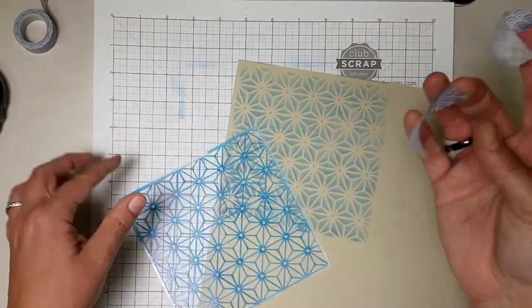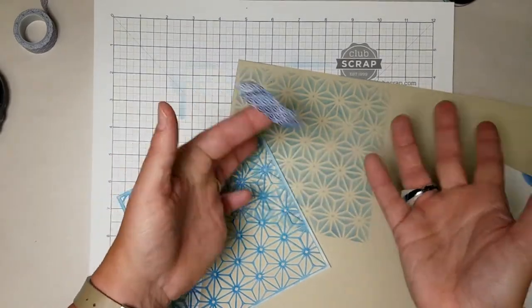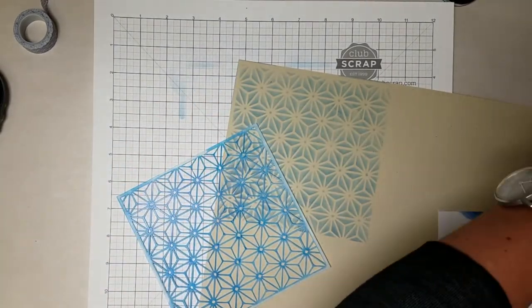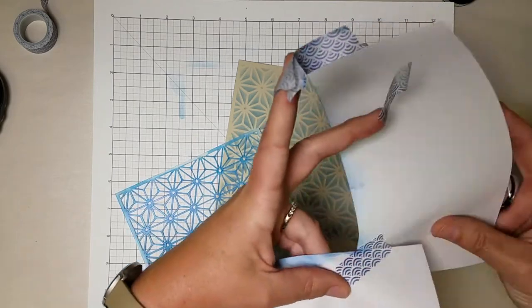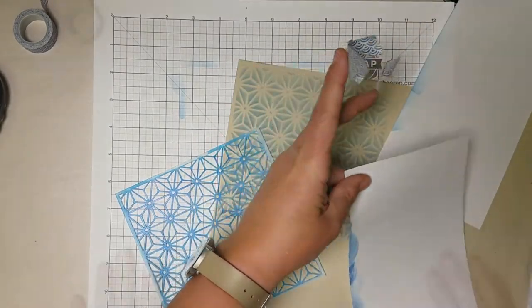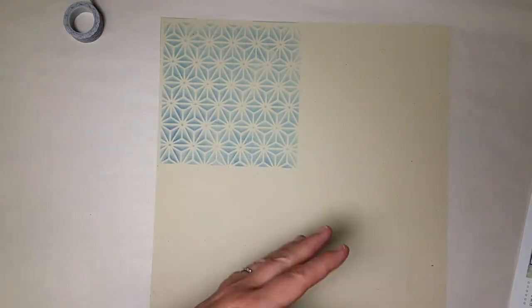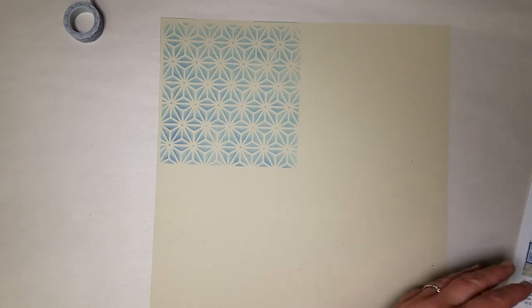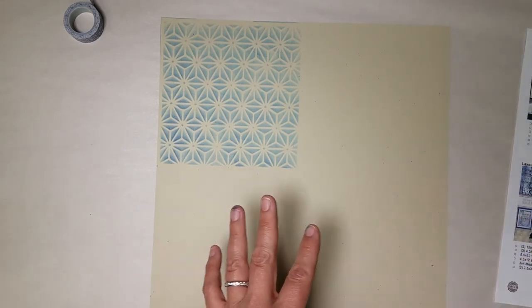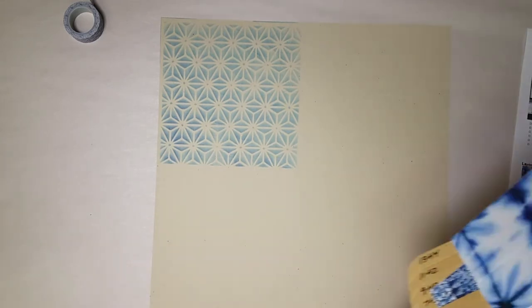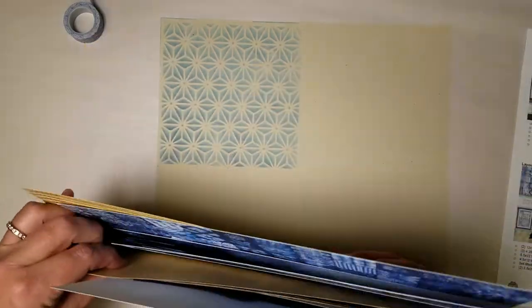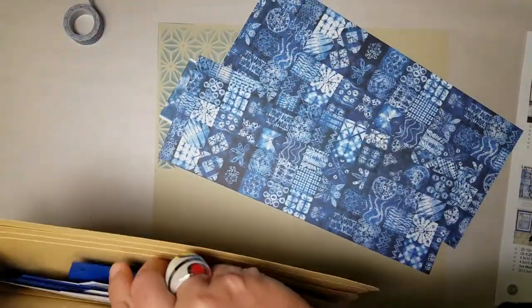And once again, you see that the washi tape is a wonderful tool for protecting our work surface. Now when I made my actual page, I did a bit more stenciling than what I've done here. But I just wanted to give you an idea of how that worked. Next, I'm going to go into my folder and take out the contents of pockets seven and eight.